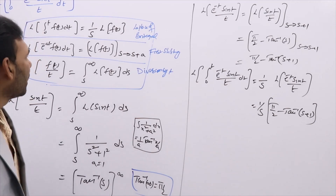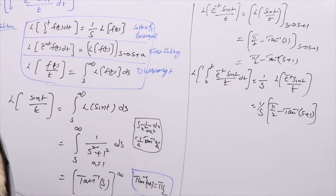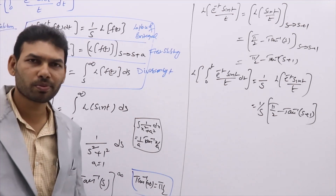Finally, since we also have the integral ∫₀ᵗ, we write (1/s) before the expression. So L{∫₀ᵗ e^(−t) sin(t)/t dt} = (1/s) × [π/2 − tan⁻¹(s + 1)], or (1/s) cot⁻¹(s + 1). This is how one can evaluate problems combining division by t with other Laplace principles. Any doubts you may express.